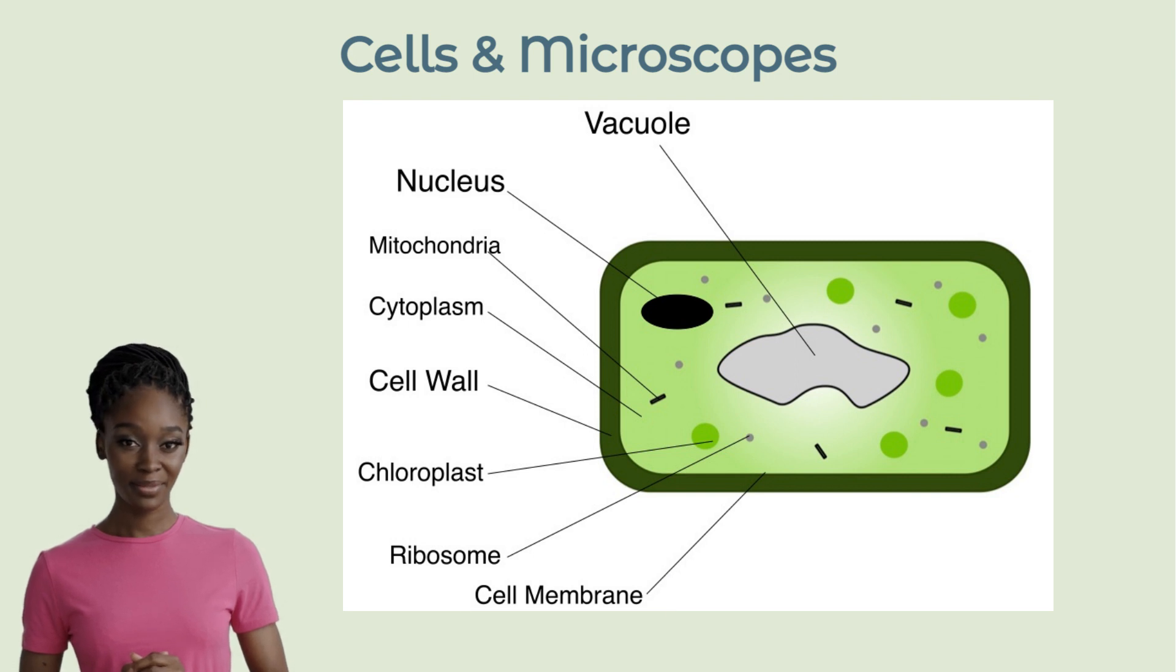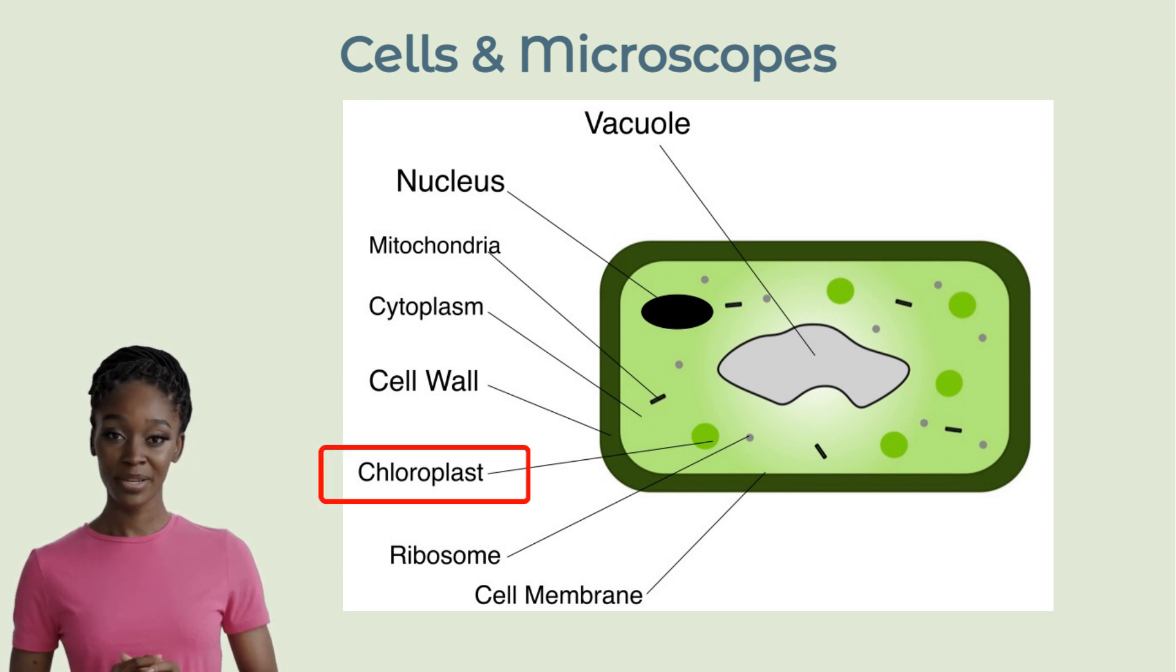Inside the cell, there's a jelly-like substance called the cytoplasm where metabolic reactions occur. The nucleus contains genetic material and controls the cell's activities. Unique to plant cells are chloroplasts, which convert light energy into chemical energy through photosynthesis.